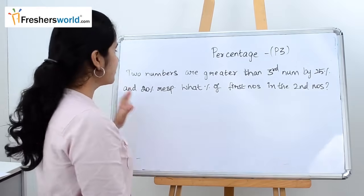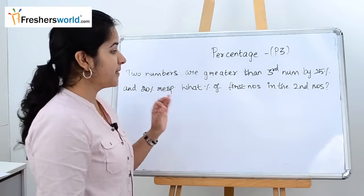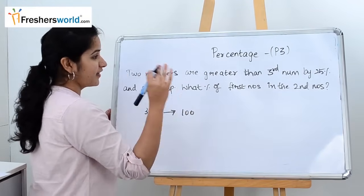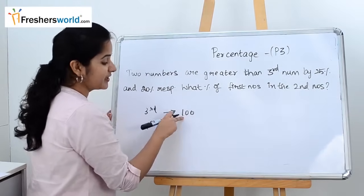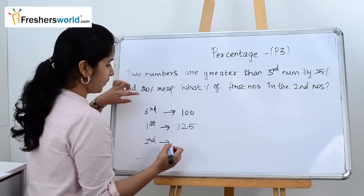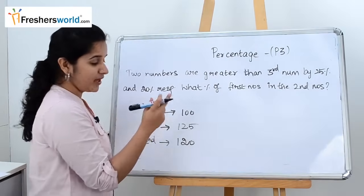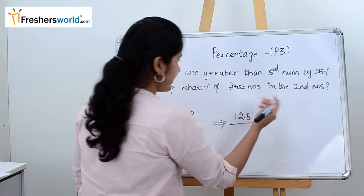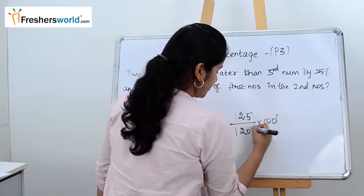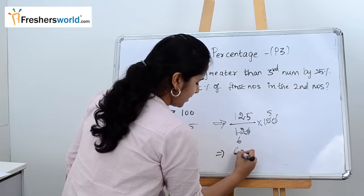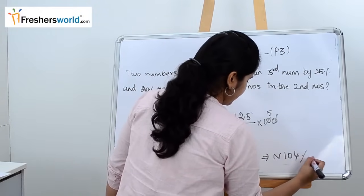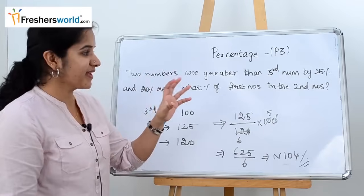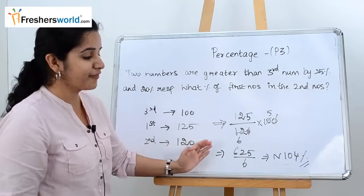Next question: two numbers are greater than a third number by 25% and 20% respectively. What percentage of the first number is the second number? Assume the third number = 100. Then first number = 125, second number = 120. First as a percentage of second = 125/120 × 100. Simplifying: 125 × 5/6 = 625/6 ≈ 104%. When you see this type of question, assume the common reference number as 100.